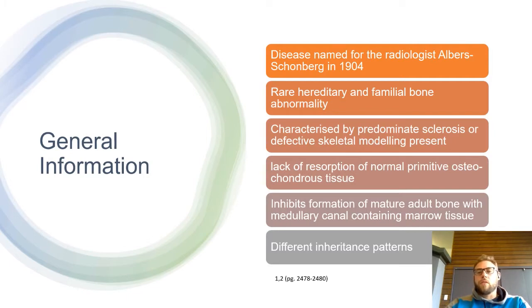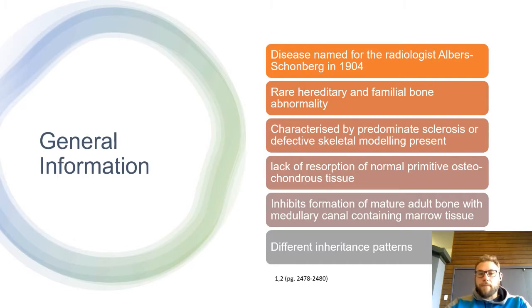It involves abnormal skeletal binary modeling and a lack of reabsorption of normal primitive osteochondrous tissue, which inhibits formation of mature adult bone with a medullary canal containing marrow tissue. There are also different inheritance patterns.